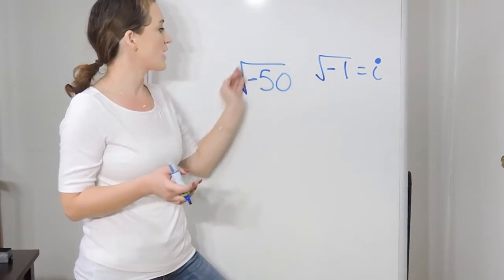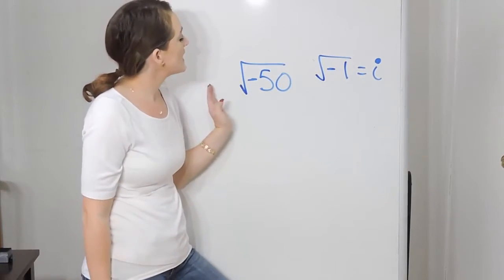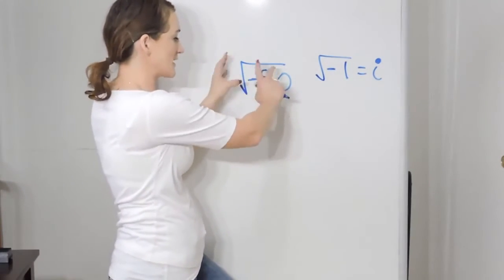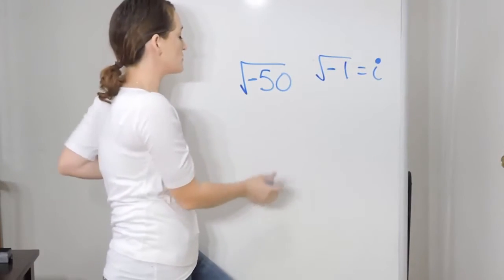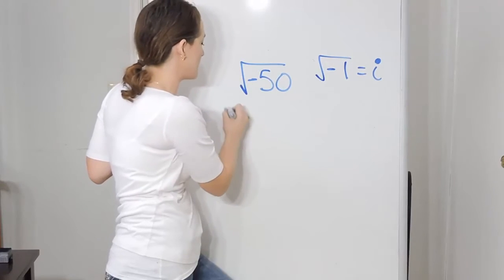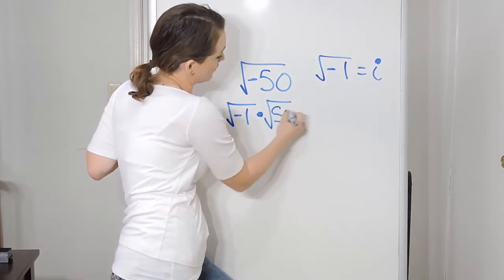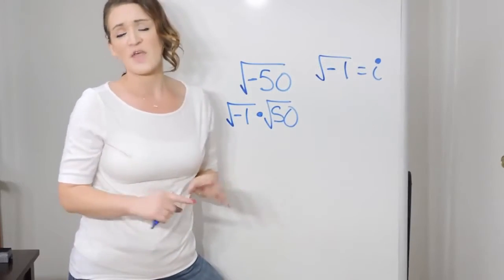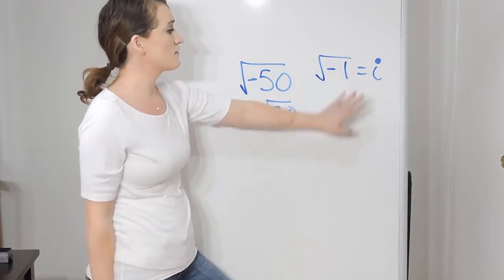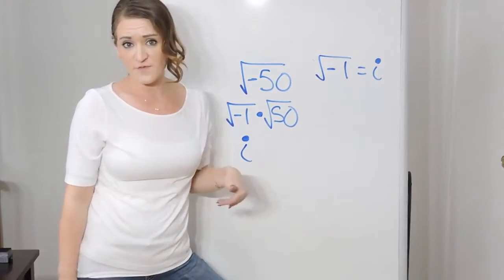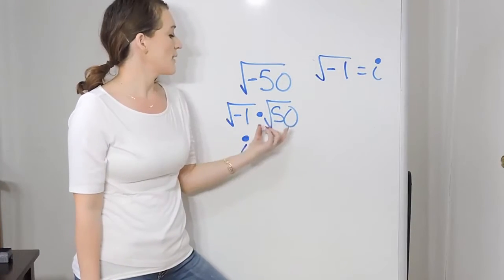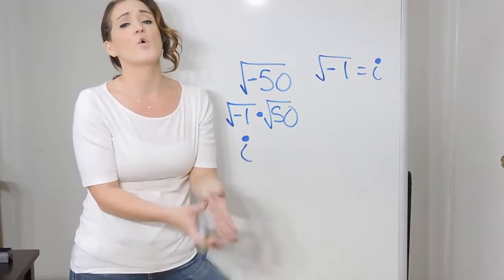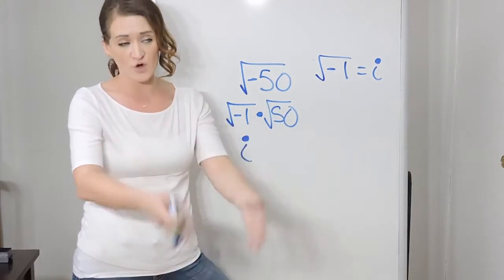What this rule allows us to do is break down our problem. So instead of taking the square root of negative 50, we're going to pull out the negative using the product rule for radicals, which says we can split a number into a product of two radicals. So the square root of negative 50 becomes the square root of negative one times the square root of 50 — because negative one times 50 is negative 50. The square root of negative one is i. Now for the square root of 50, remember when simplifying radicals you need a perfect square inside — your perfect squares like 4, 9, 16, 25, 36, and so forth.